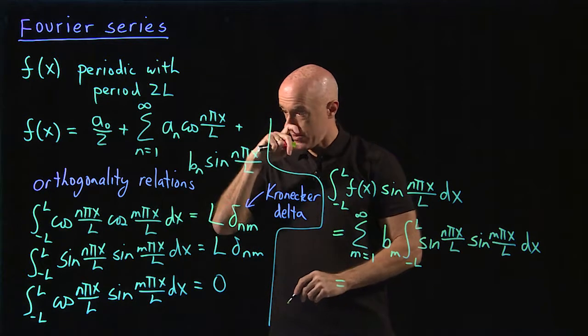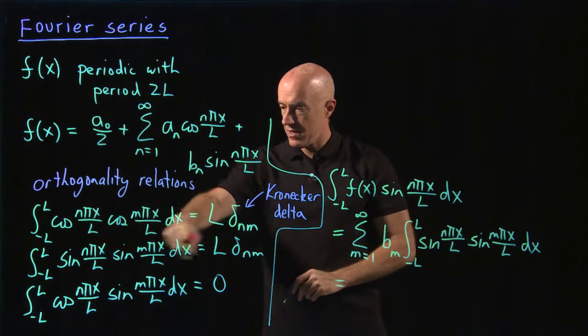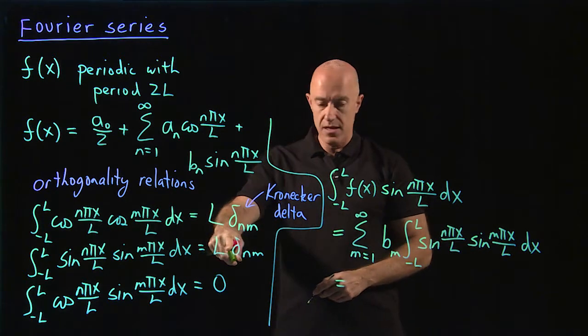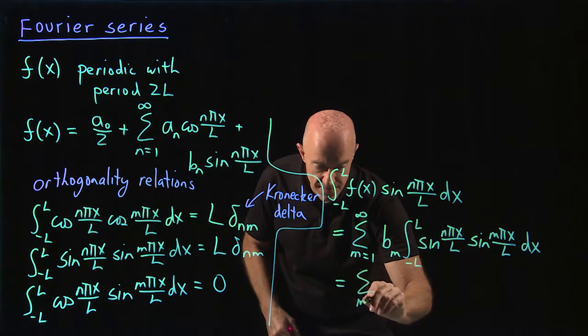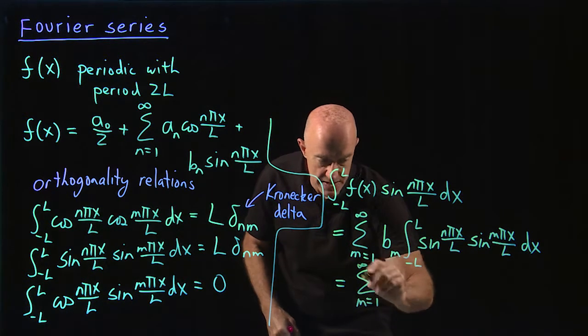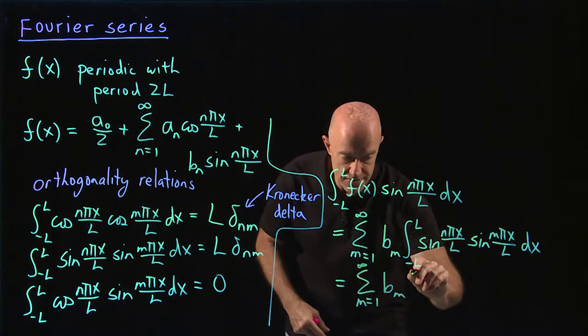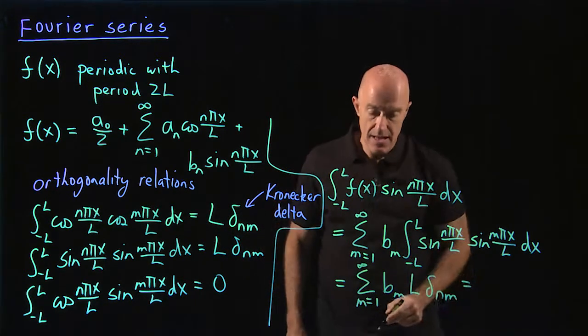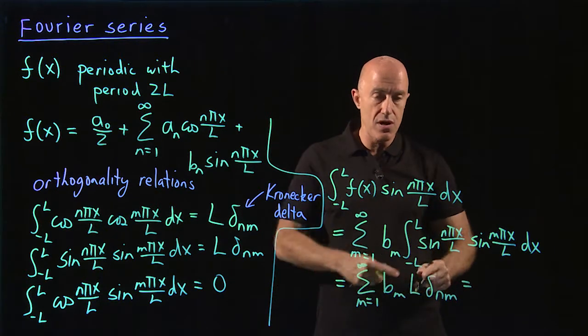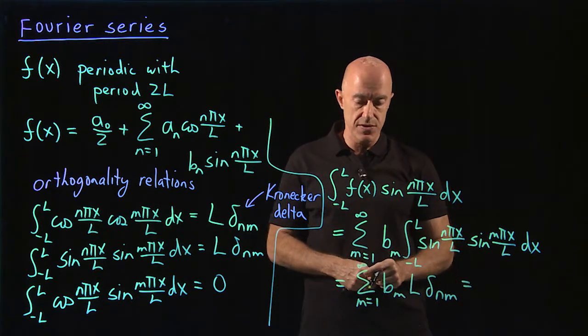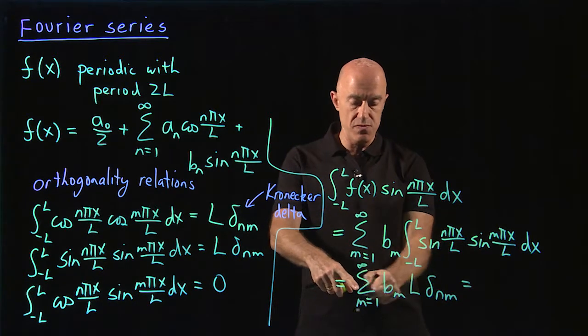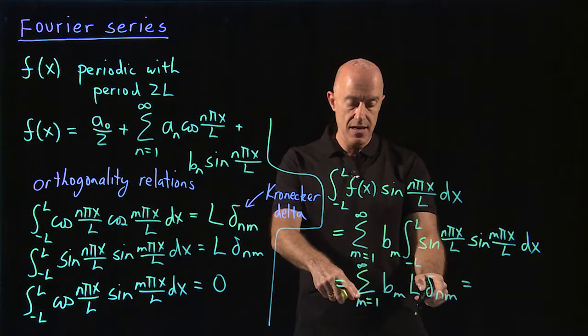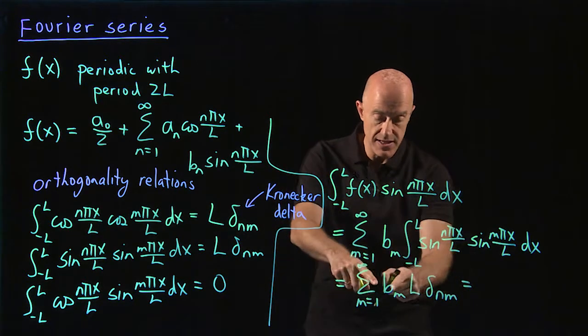So now we would make use of our second orthogonality relation. So this integral would be l delta nm. So this would be the sum from m equals 1 to infinity, b sub m, times l delta nm. And now delta nm is 0 unless m is equal to n. So every term in this sum will be 0 except the term where m is equal to n. And then we get l times bn.